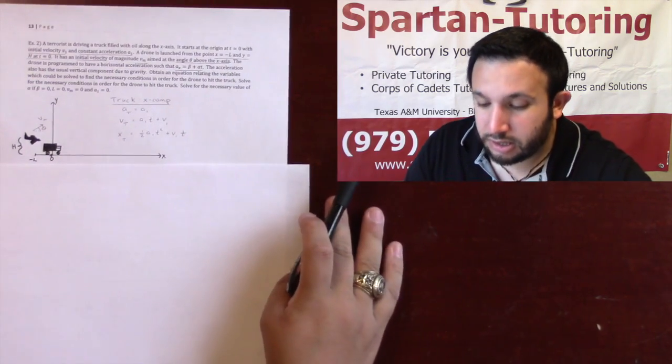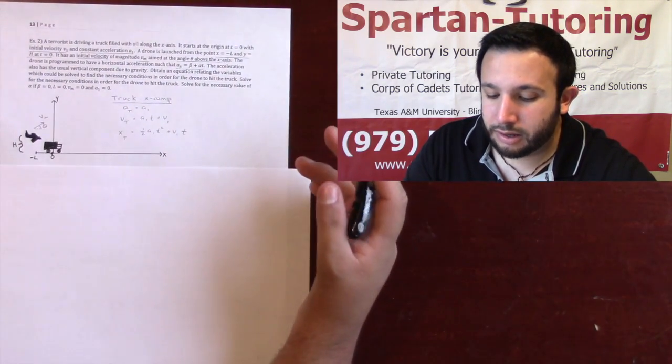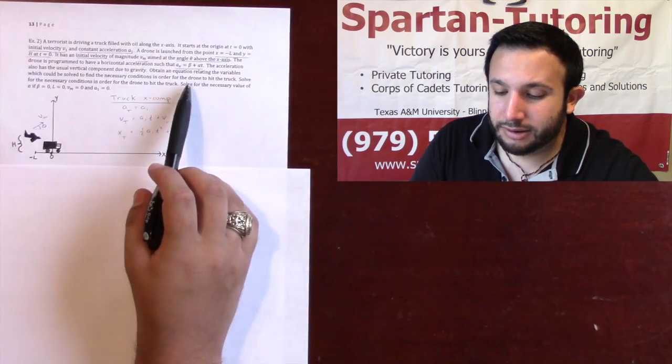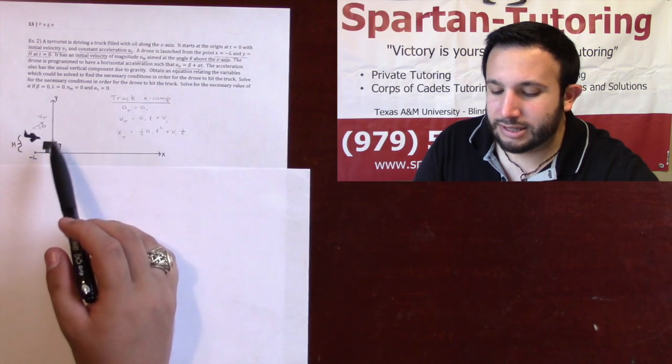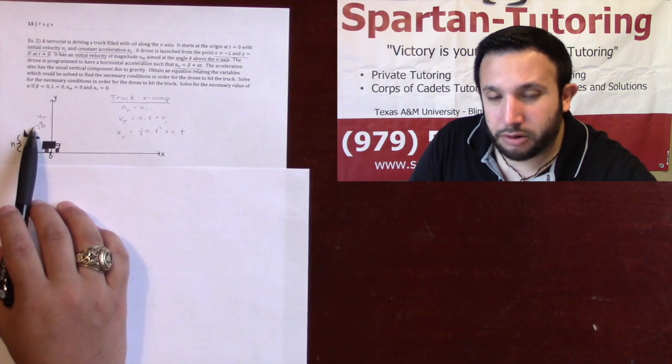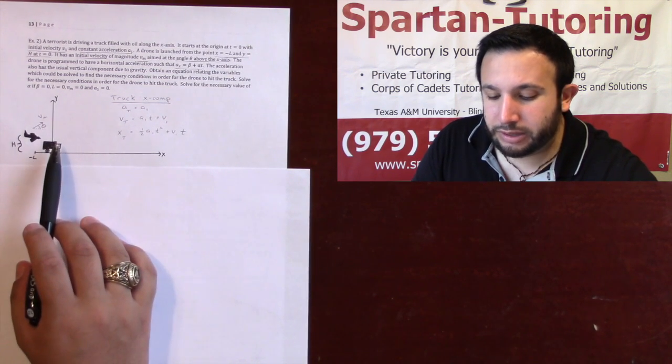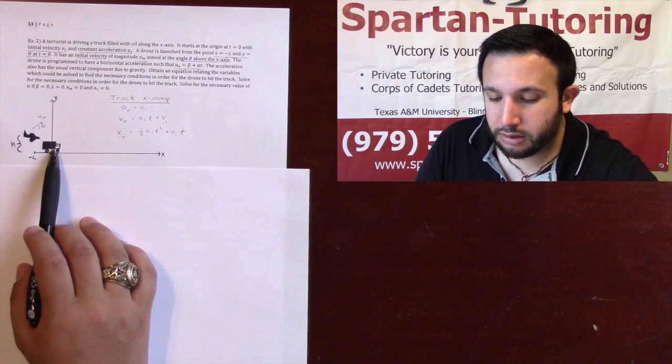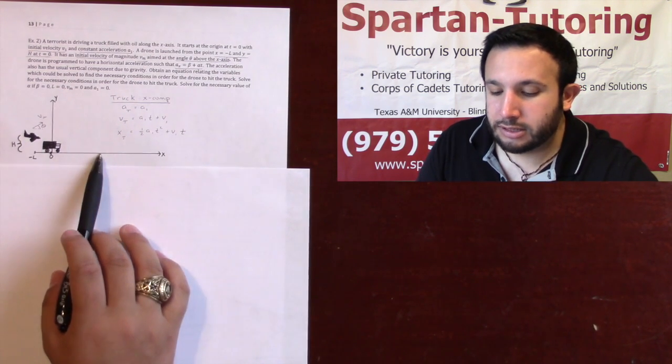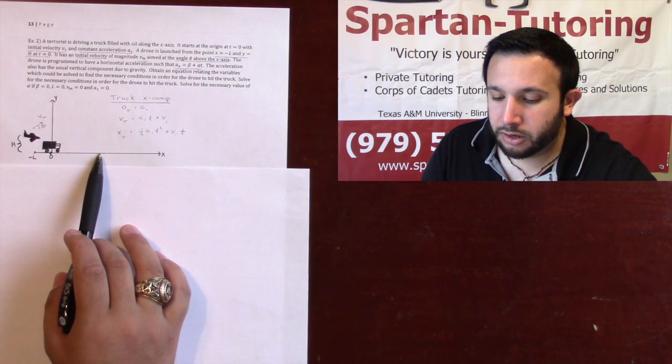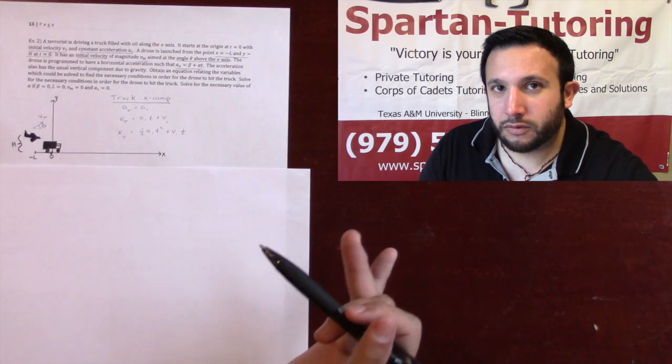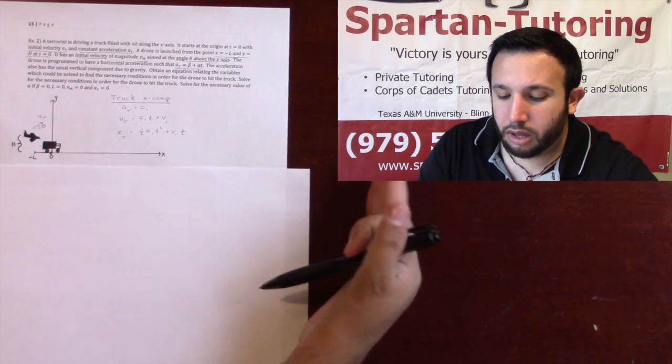Okay, that's a long problem. But what you need to do is the key thing here is this drone needs to hit that truck. And so the strategy is going to be that the x component of the drone is going to equal the x component of the truck when the y component of the drone is equal to zero. But in order to be able to do that, we need to find the acceleration, velocity, and position of the truck and the drone.